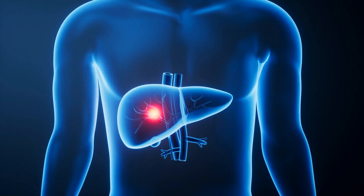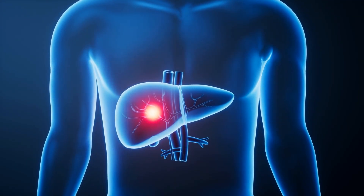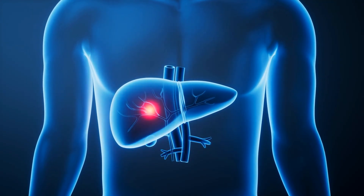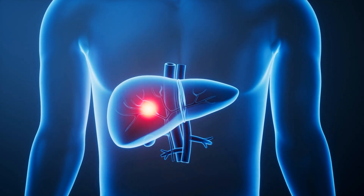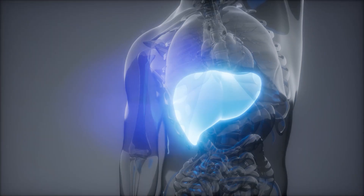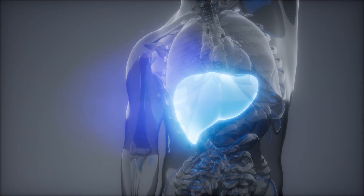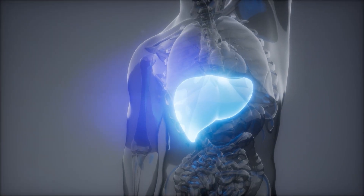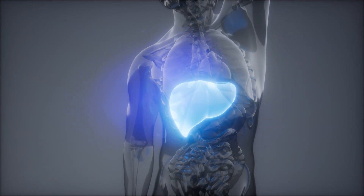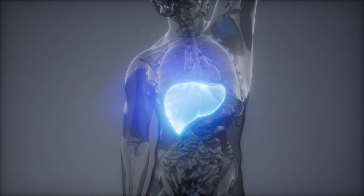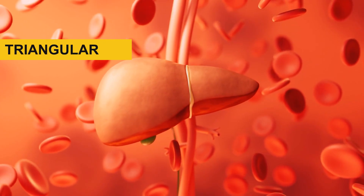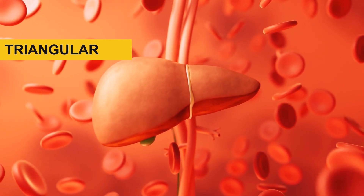The liver is the largest internal organ and is located in the upper right quadrant of the abdomen, just beneath the diaphragm. It extends from the right side of the body to the midline. It has a complex and somewhat irregular shape, and is often described as having a roughly triangular shape.